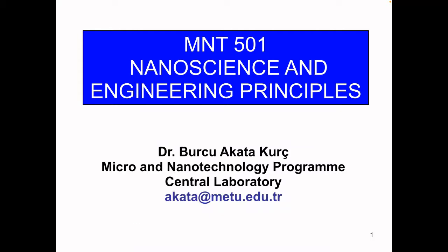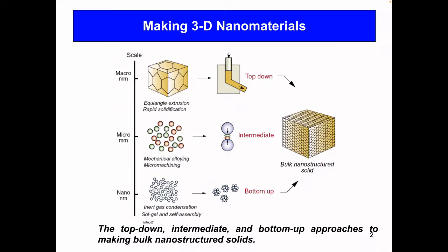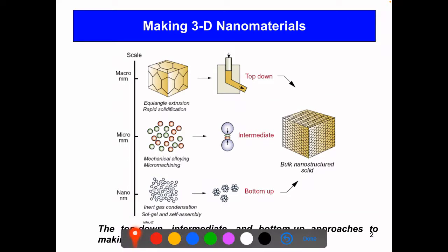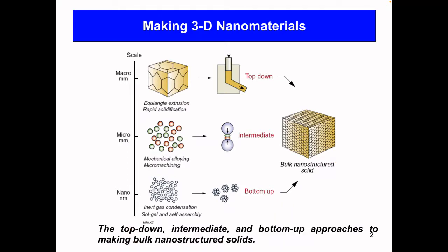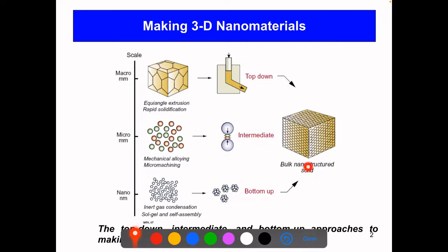We're going to make an introductory class today and talk about how to make nanomaterials. Imagine you want to make the tiniest computer chip possible — this is your bulk nanostructured solid that you want to make for the company you're working at. In general, in nanotechnology, you have two approaches.